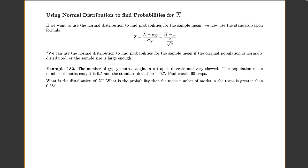To use the normal distribution to find probabilities for the sample mean, we use the standardization formula. Previously for one value we used z = (x − mu) / sigma. Now when dealing with x-bar, you use z = (x-bar − mu-x-bar) / sigma-x-bar. You can simplify knowing that mu-x-bar = mu and sigma-x-bar = sigma / sqrt(n). You can only use this normal distribution approach if the original population is normally distributed or your sample size is at least 30.